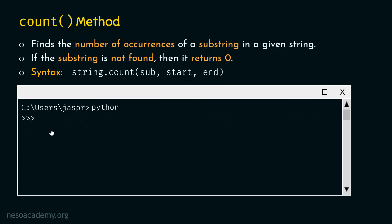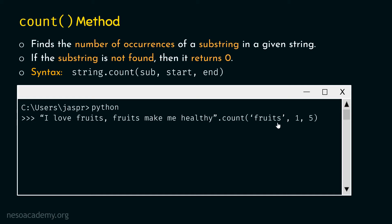Let's move to the next example. We type: 'I love fruits, fruits make me healthy'.count('fruits', 1, 5). The start index is one and the end index is five, so the search covers from the whitespace character to the letter 'e'. If we hit enter, we will get zero as a result, because 'fruits' is not found within this narrow range. This is the reason why count method returns zero.